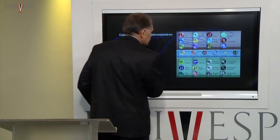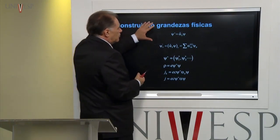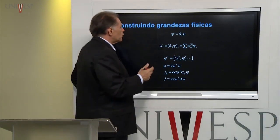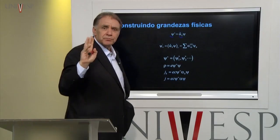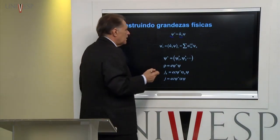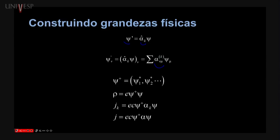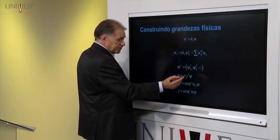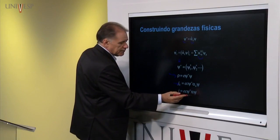Como esse campo tem quatro componentes, eu posso construir um campo qualquer aplicando matrizes 4x4. Fazemos o produto de matrizes aplicado a esse campo. Constrói-se também observáveis, como a densidade de carga elétrica, que é o produto da carga vezes Psi-cruz Psi, ou a densidade de corrente, e assim por diante. Utilizando matrizes.